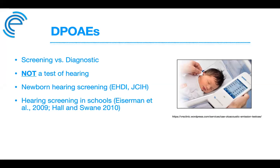Early Hearing Detection and Intervention (EHDI) refers to screening every newborn before leaving the hospital, in accordance with the Joint Committee on Infant Hearing's 2019 guidelines. The 1-3-6 principle requires screening by one month, diagnostic testing by three months, and intervention by six months. The current goal is a 1-2-3 principle where intervention occurs no later than three months.